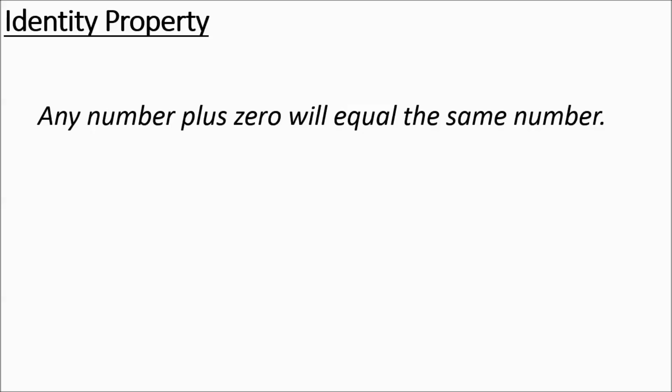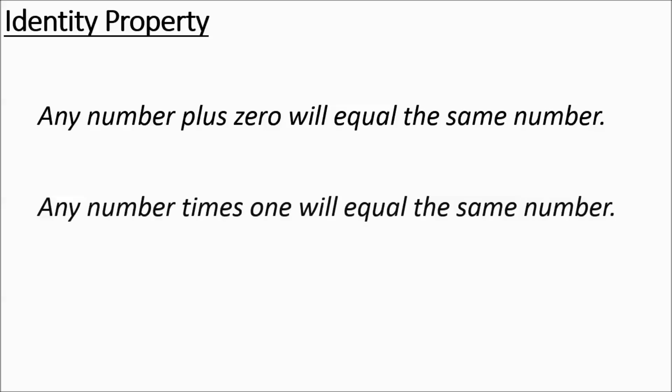The identity property is the first one we're going to talk about. Basically, any number plus zero will equal the same number, or any number times one will equal the same number. Both of them have a number, you do something to it, and then you end up with the same number.